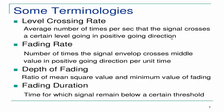Some terminologies used in the analysis of small scale multipath: the level crossing rate is the average number of times per second that the signal crosses a certain level in the positive-going direction. The fading rate is the number of times the signal envelope crosses the middle value in the positive-going direction per unit time. The depth of fading is the ratio of mean square value to the minimum value of fading. Fading duration is the time for which the signal remains below a certain threshold level.